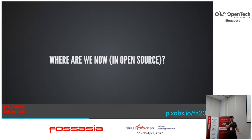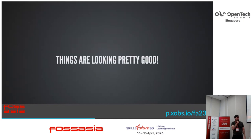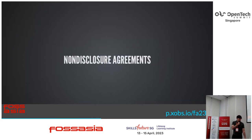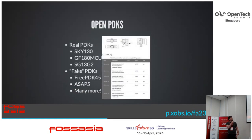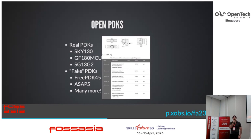Having said all that, where are we now in open source? These are actually looking pretty good. Non-disclosure agreements — we don't have to do them. Everything is up on GitHub and freely available; no NDA required. For open PDKs, we actually have quite a few: Sky130 from Skywater in the US, GF180 from Global Foundries — 130 and 180 nanometers respectively — and SG13G2 from Austria, which is relatively new.